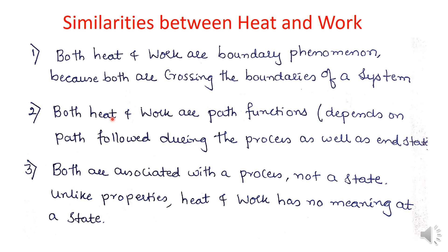We will prove in the next class how heat and work are called path functions. Both heat and work are associated with a process, not a state, because they depend on the path. Unlike properties, heat and work have no meaning at a state — that is, at an initial or final state — because they depend on the path followed during the process.